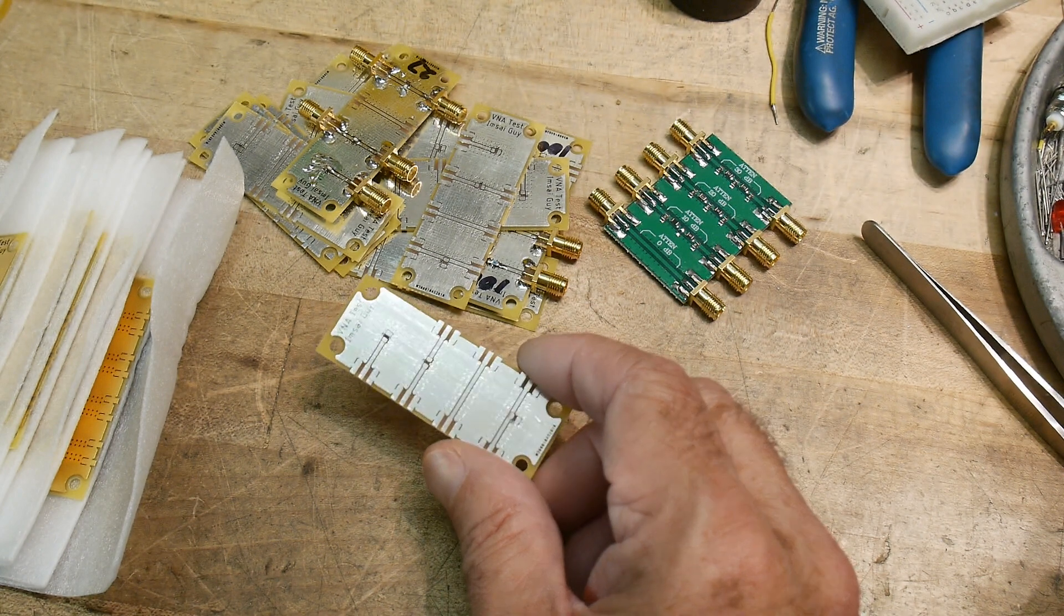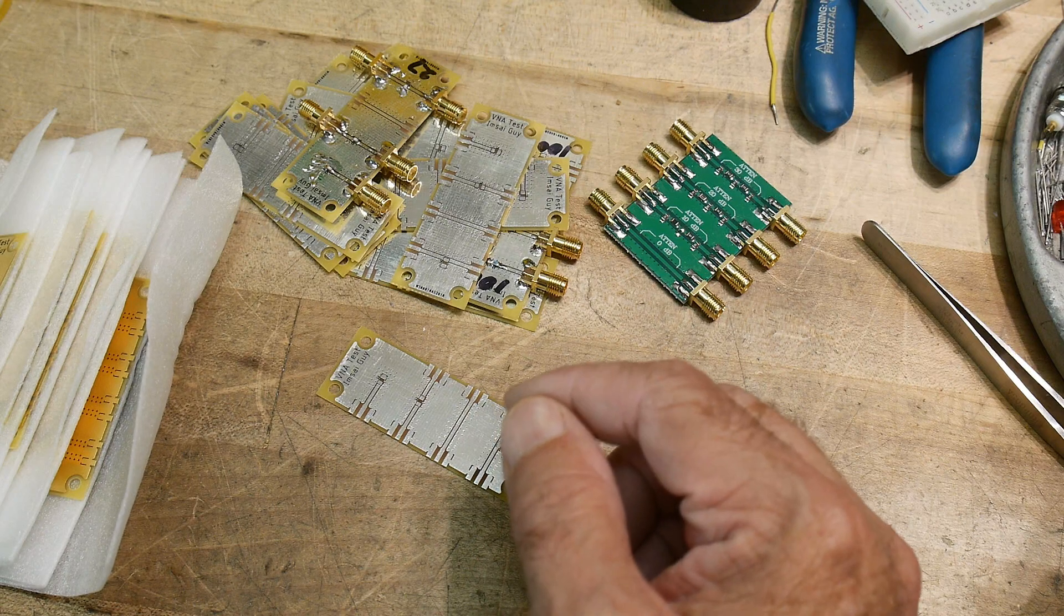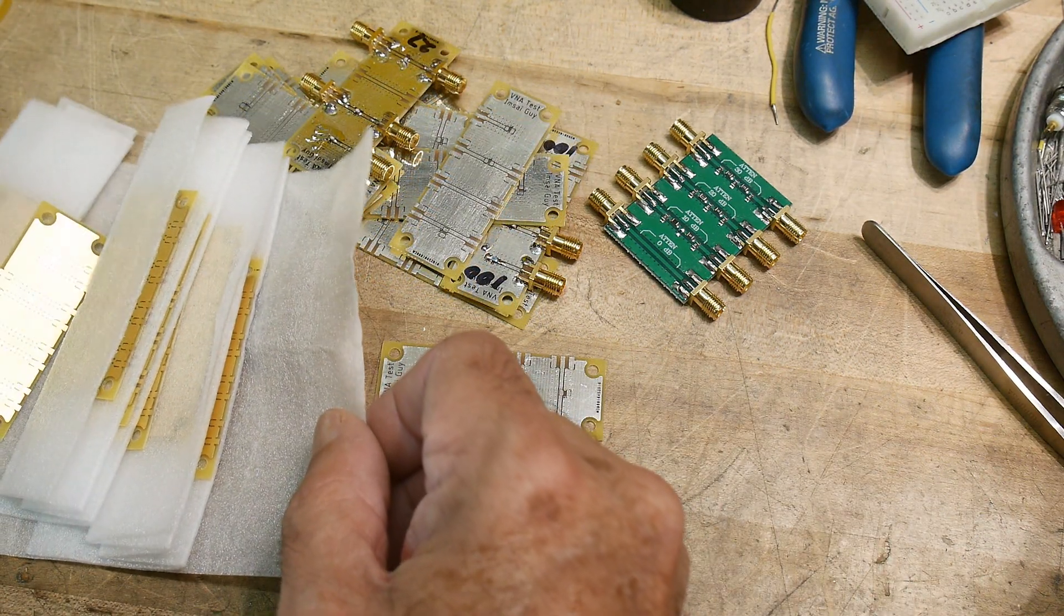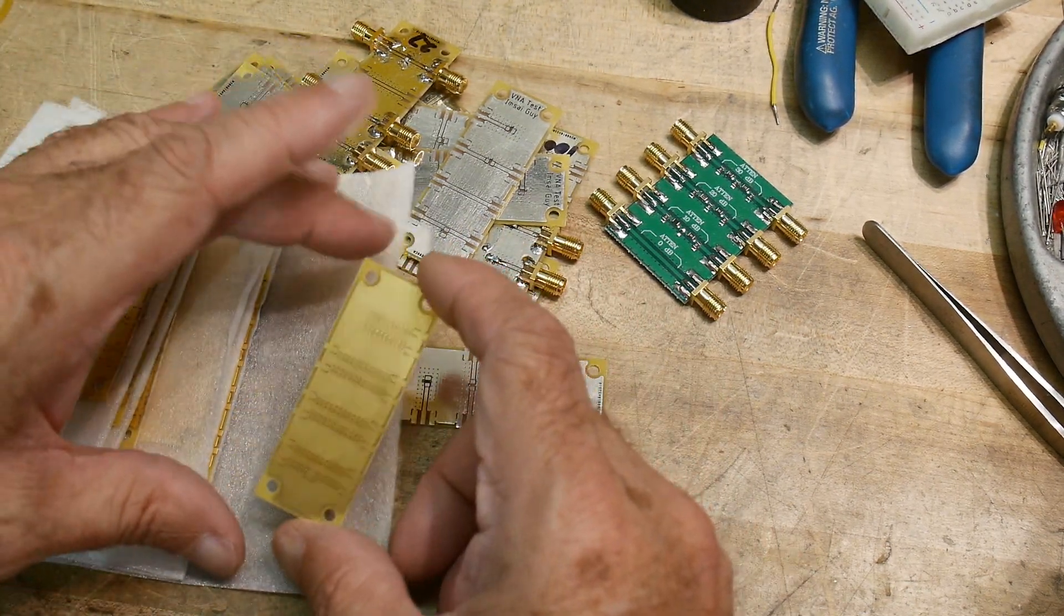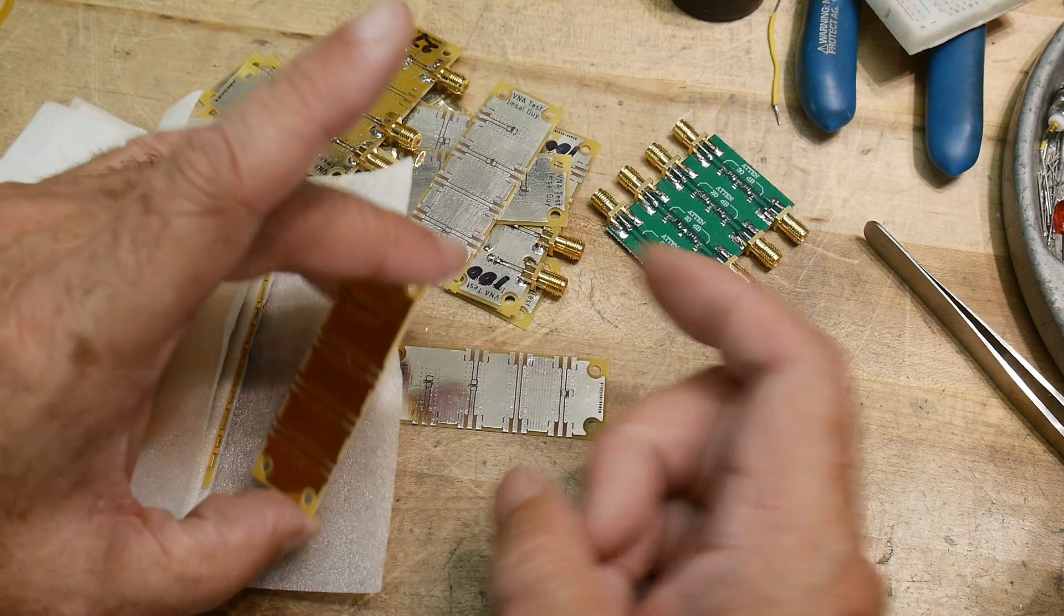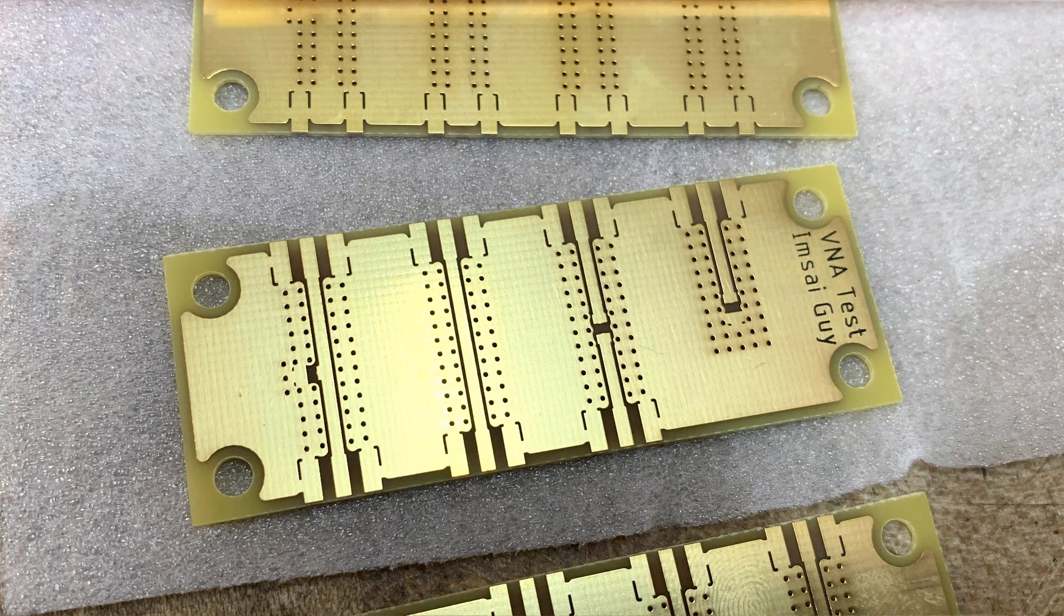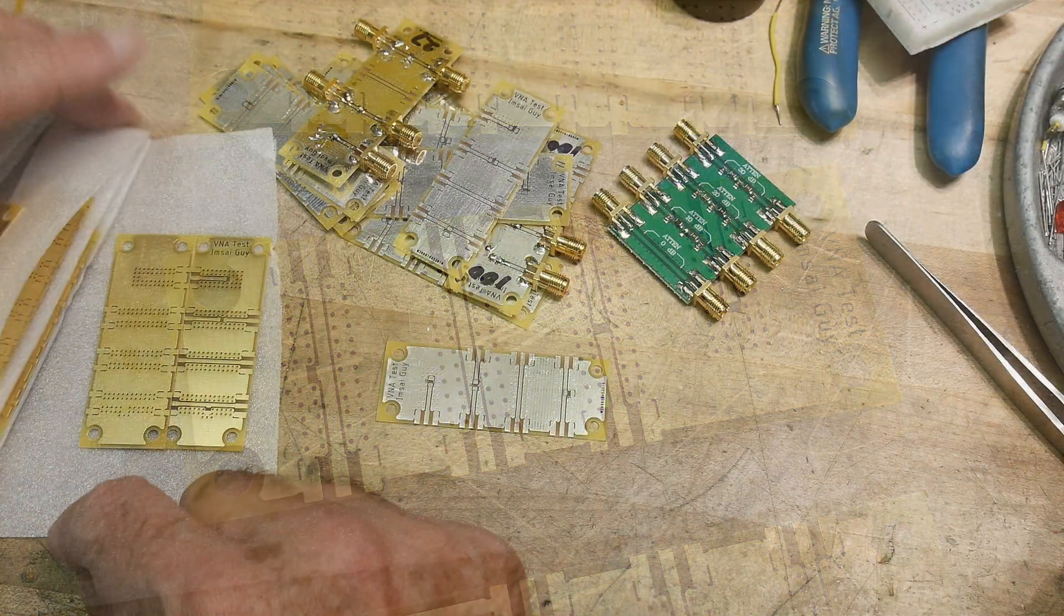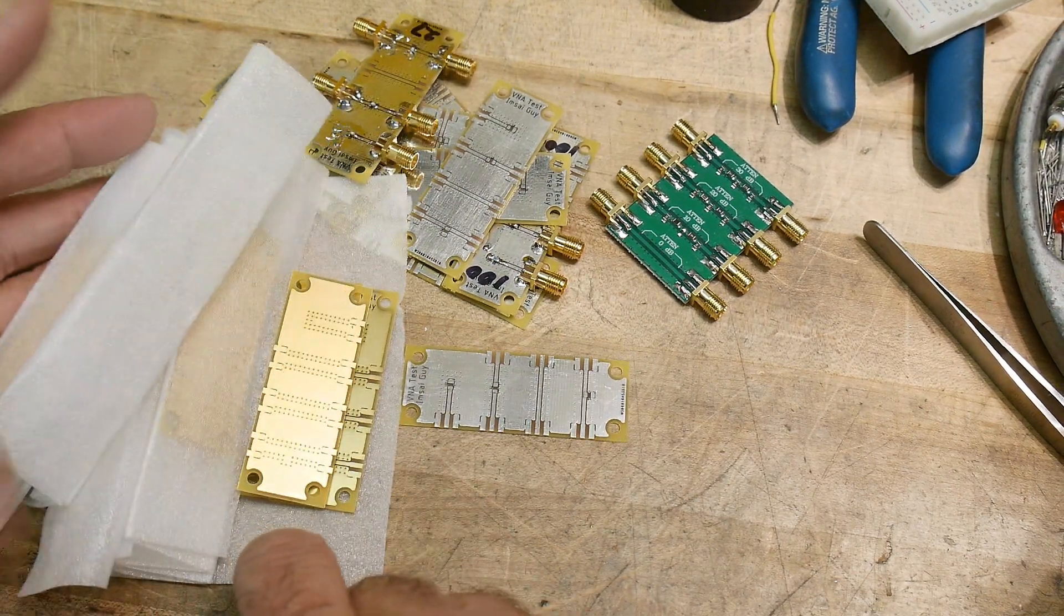I widened the trace a little bit and widened the gaps a little bit. Let's take a look at these new boards. I had them flashed with gold, so these are gold both sides. They are beautiful, individual little wraps here to make sure the gold doesn't scuff.